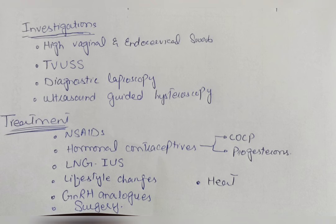Investigations for dysmenorrhea include: most importantly, a high vaginal and endocervical swab; transvaginal ultrasonography; diagnostic laparoscopy; and ultrasound-guided hysteroscopy. On transvaginal ultrasonography, an enlarged uterus or heterogeneous uterine texture can help detect endometriosis and adenomyosis. Diagnostic laparoscopy should be done in patients with a history of endometriosis, or those with normal swab and ultrasonography but persistent symptoms, or patients wanting reassurance that their pelvis is normal. In primary dysmenorrhea, diagnostic laparoscopy is not recommended. Ultrasound-guided hysteroscopy is advised for patients with cervical stenosis.